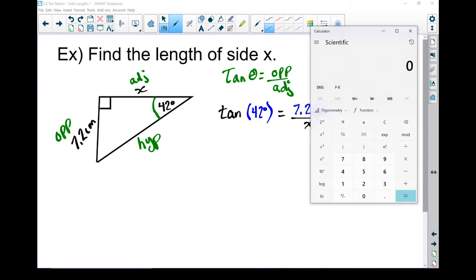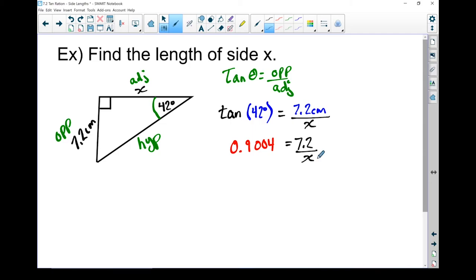double check I'm in degree mode. I'm going to go 42 and hit my tan button. Okay, so tan of 42 is 0.9004. We've got that variable on the bottom this time, so it makes for a slightly messier solution. I can't just divide by 7.2 because I still have that x on the bottom. So what I'm actually going to do, I'm going to take both sides and times it by x.